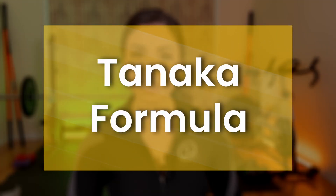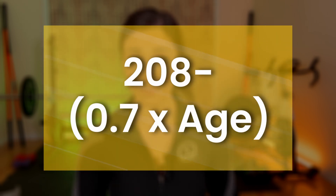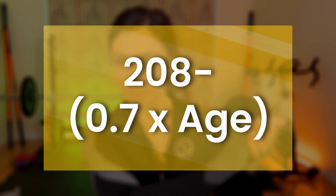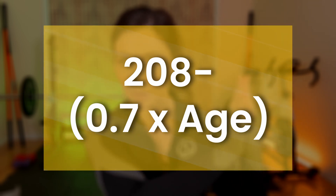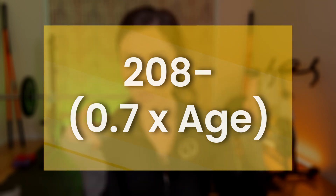The Tanaka formula is simply: 208 minus (0.7 times your age). If you have that packet with you, you can write this out and it'll guide you through all the calculations you need. Don't forget order of operations — do the things in the parentheses first before any subtraction. Multiply 0.7 times your age first, and then subtract that result from 208.